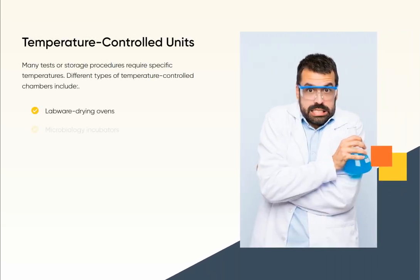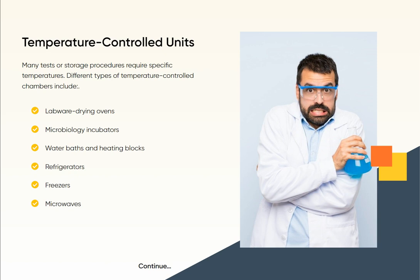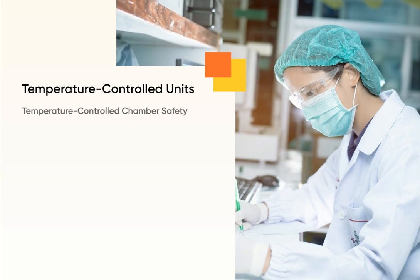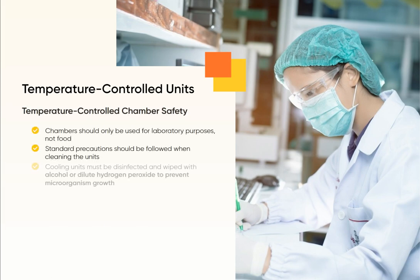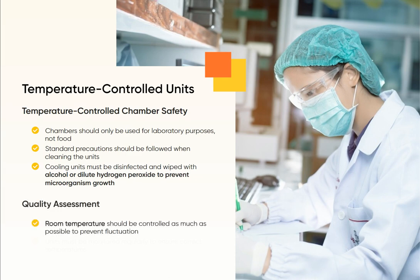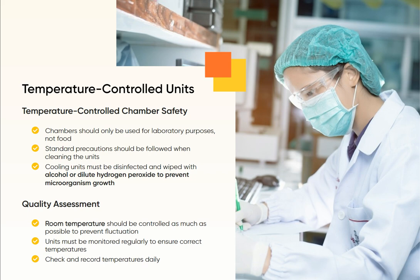Many tests or storage procedures require specific temperatures. Different types of temperature-controlled chambers include labware drying ovens, microbiology incubators, water baths and heating blocks, refrigerators, freezers, and microwaves. Chambers should only be used for laboratory purposes, not food. Standard precautions should be followed when cleaning the units. Cooling units must be disinfected and wiped with alcohol or dilute hydrogen peroxide to prevent microorganism growth. Room temperature should be controlled as much as possible to prevent fluctuation. Units must be monitored regularly to ensure correct temperatures — check and record temperatures daily.